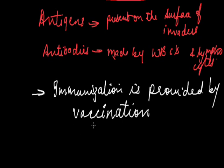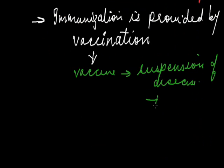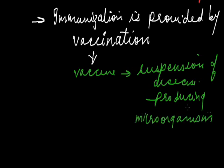Vaccination is done by inoculation of a vaccine. A vaccine is a suspension of a disease-producing microorganism that is modified by killing or weakening so that it will not cause disease, but rather stimulates the formation of antibodies upon inoculation.